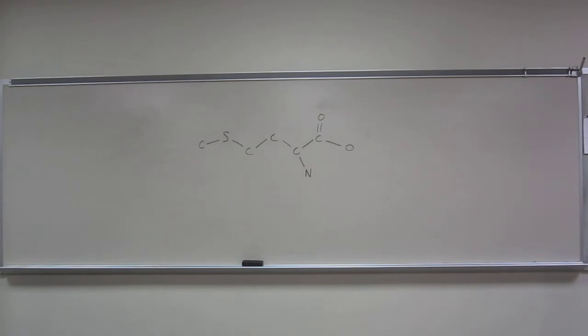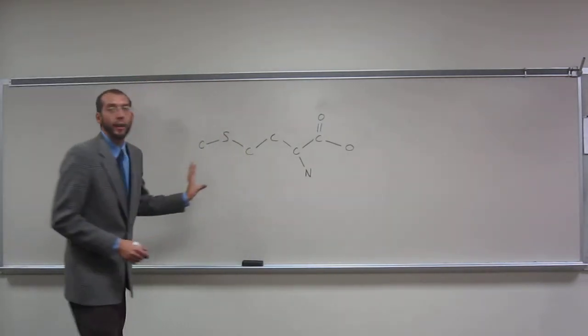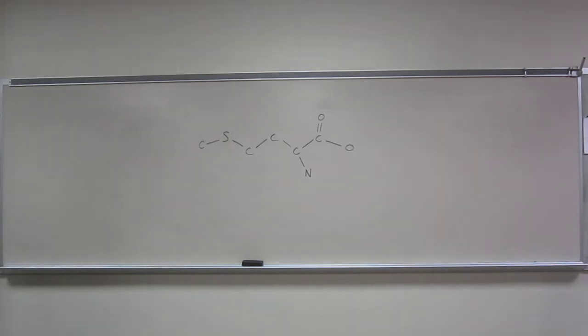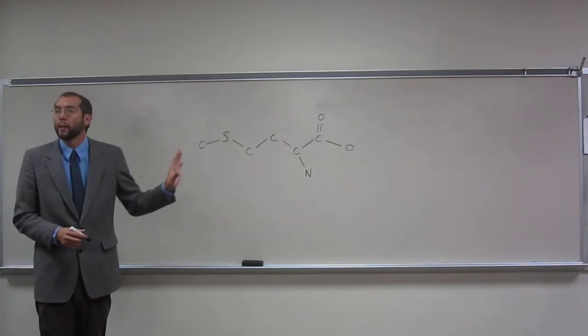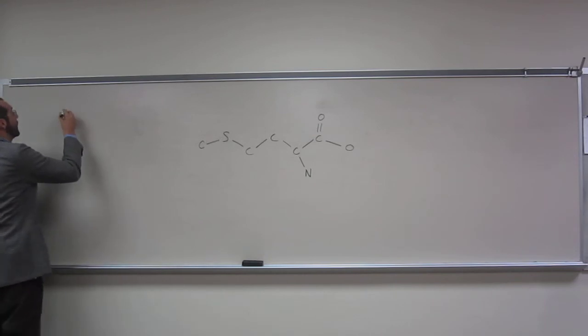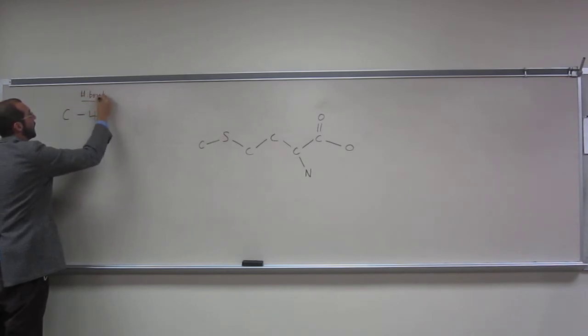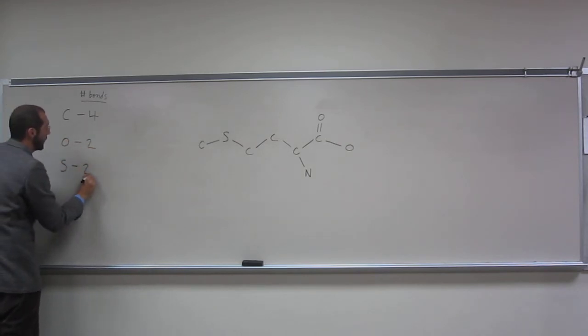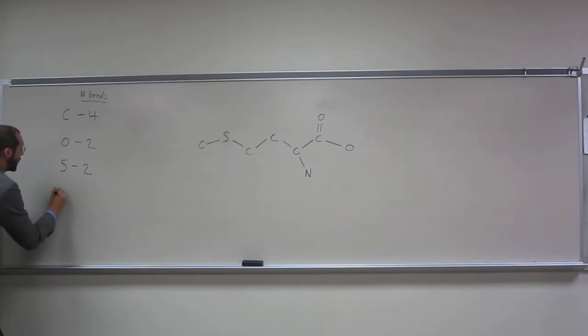So they want us to figure out what is the molecular formula of methionine. Think you guys can do that? So the only thing we're missing on this thing is hydrogens. So let's write down what the problem said. So it said carbon is four bonds, oxygen was two, sulfur was two, and nitrogen was three.